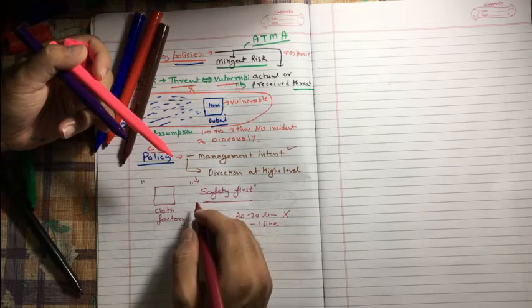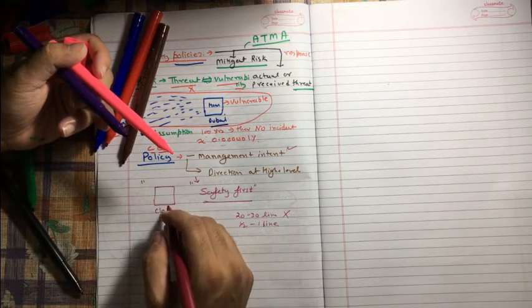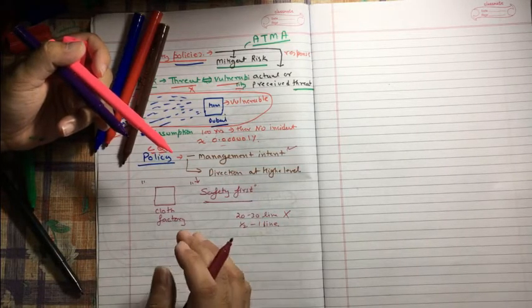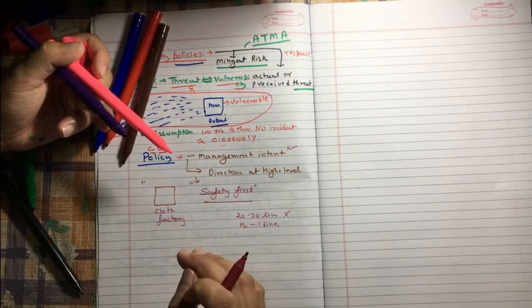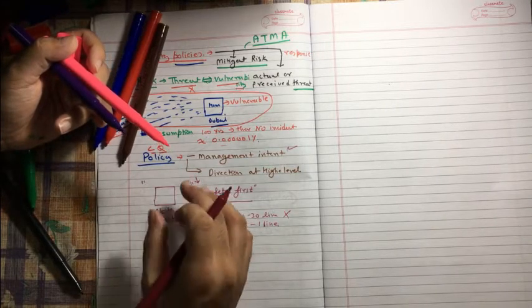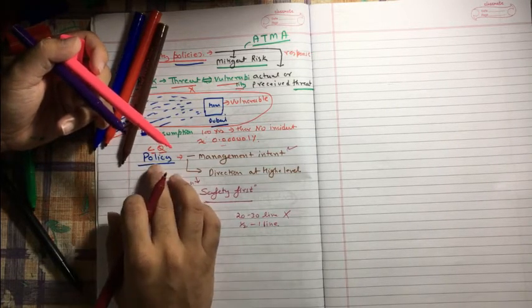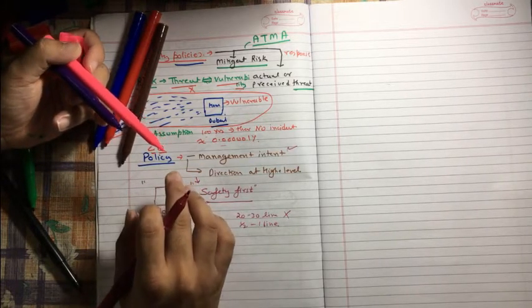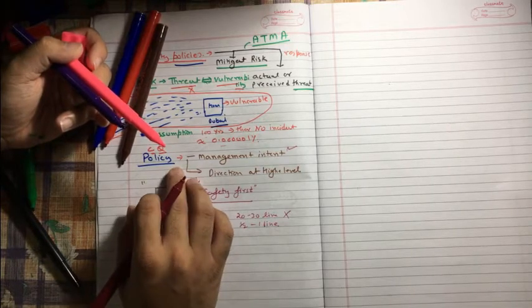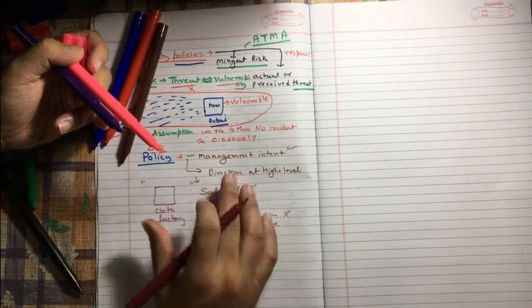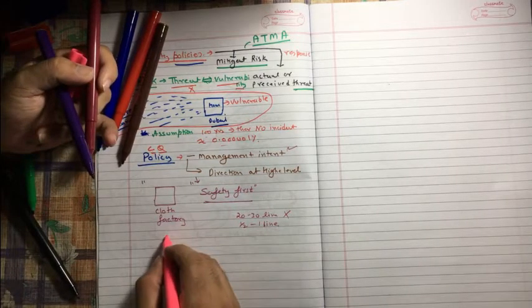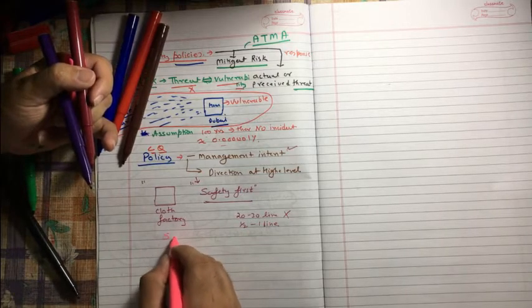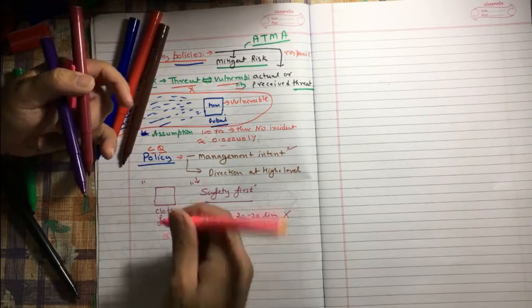That's the basic detail you must know when it comes to policy. When we develop the information security strategy, this policy has to be developed or modified to support the strategic objective. In case we require to modify or develop any new policy, that totally depends upon or is directly proportional with the strategic objective. If my organization's objective changes, then we need to change the policy as well.